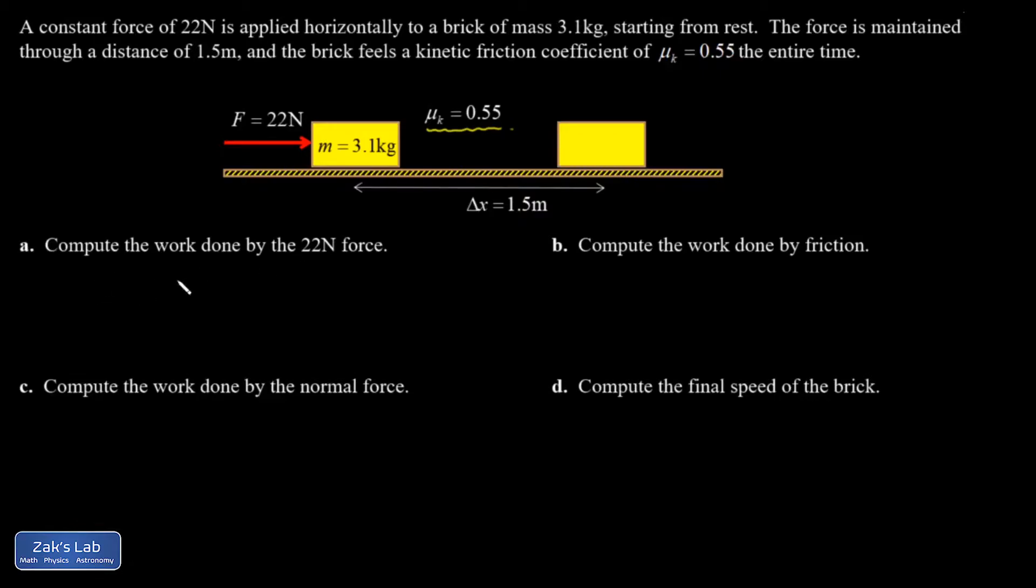So the first question is, what's the work done by the 22 newton force? And it doesn't get any more straightforward. The work is going to be the parallel component of the force multiplied by the displacement. And in this case, the entire force points parallel to the displacement. So there's nothing complicated happening here. I just take my 22 newtons and multiply it by 1.5 meters, and I get 33 joules of work.